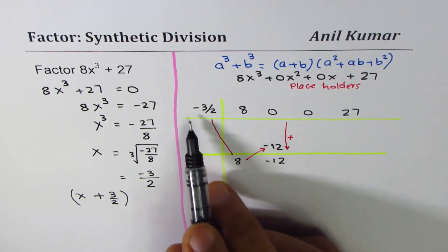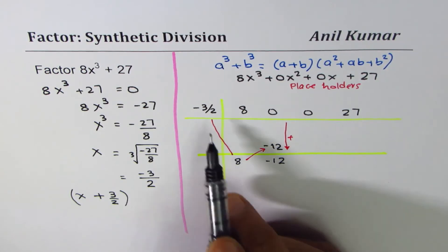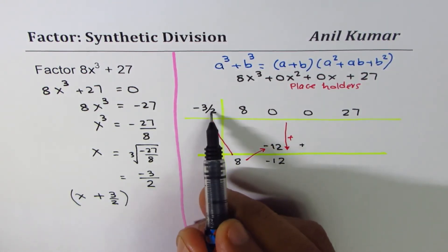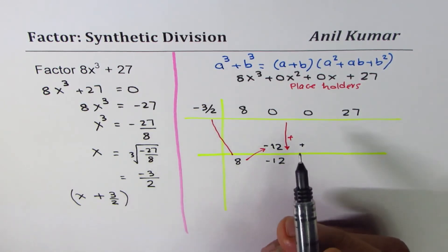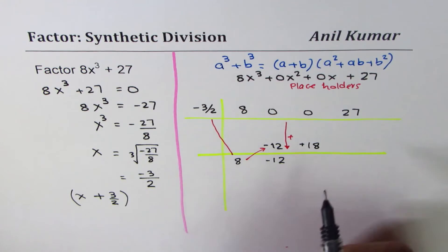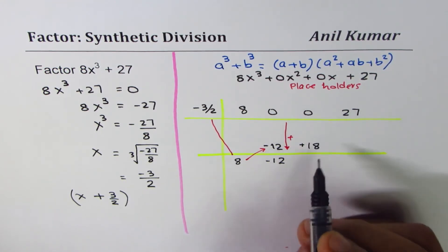We can again multiply -3/2 by -12. Minus and minus becomes plus. 12 divided by 2 is 6, 6 times 3 is 18, so we get 18 here. Adding gives us 18.